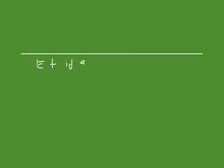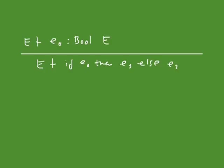For if-then-else — if e0 then e1 else e2 — the obvious requirement is that e0 should be a boolean, so when you type e0 it should have type bool. Additionally, e1 and e2 should have the same type: if e1 has type t for some t, then e2 must also have that same type t. If that's the case, the entire expression gets type t. You don't want the branches to have separate types because that would create problems.